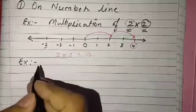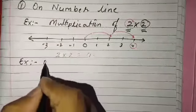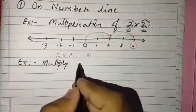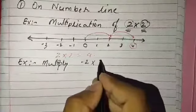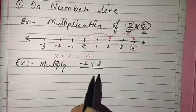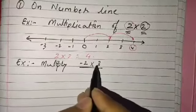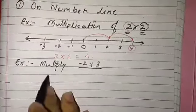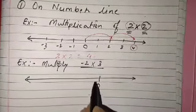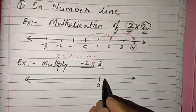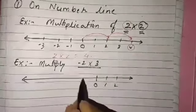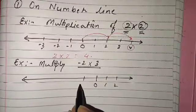The next case is one positive number and one negative number. For example, minus 2 into 3. When one number is negative and the other is positive, we go to the left-hand side on the number line, because negative numbers lie on the left of zero. For positive we counted the right-hand side, so for negative we will go in the left-hand side.